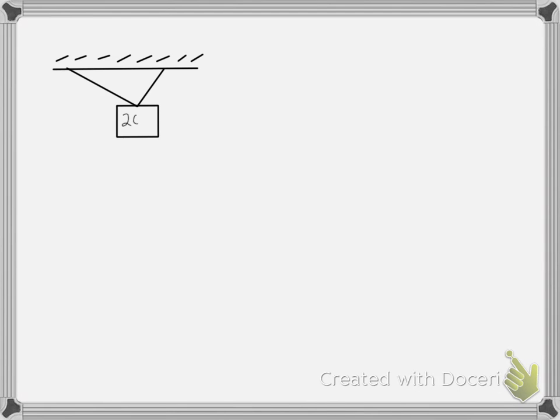This video is going to show you how to do a two-dimensional equilibrium problem where you have to find two of the forces involved. So the first thing that we do, of course, is draw our free body diagram. And you can see that I've added two tensions for the two ropes and the weight.